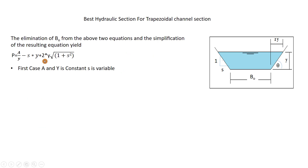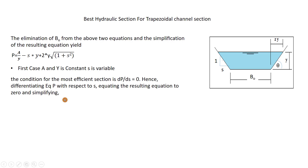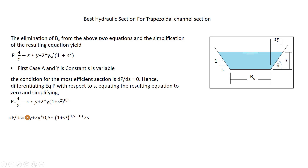Now we have two cases to find the most efficient hydraulic section for a trapezoidal channel. Case 1: A and y are constant, s is variable. We differentiate P with respect to s and set dP/ds = 0. I rewrite √(1 + s²) as (1 + s²)^0.5. Now we derive this equation: the derivative of A/y is zero since it is constant.